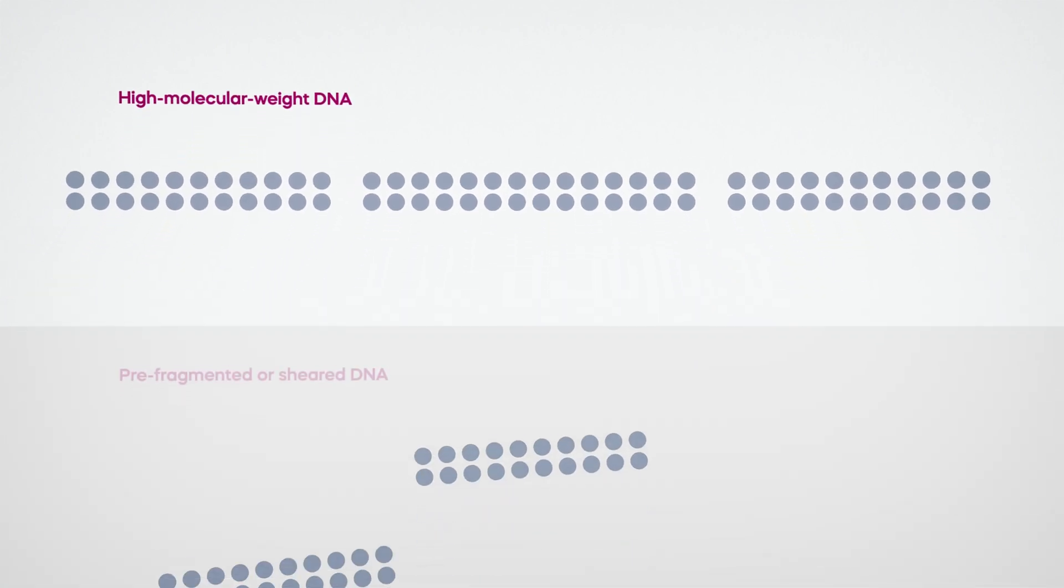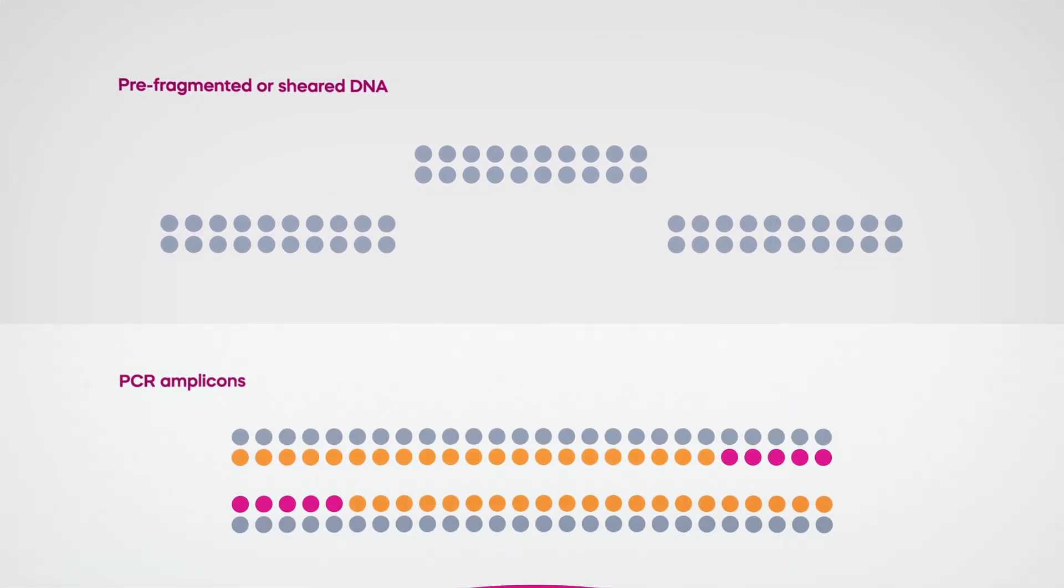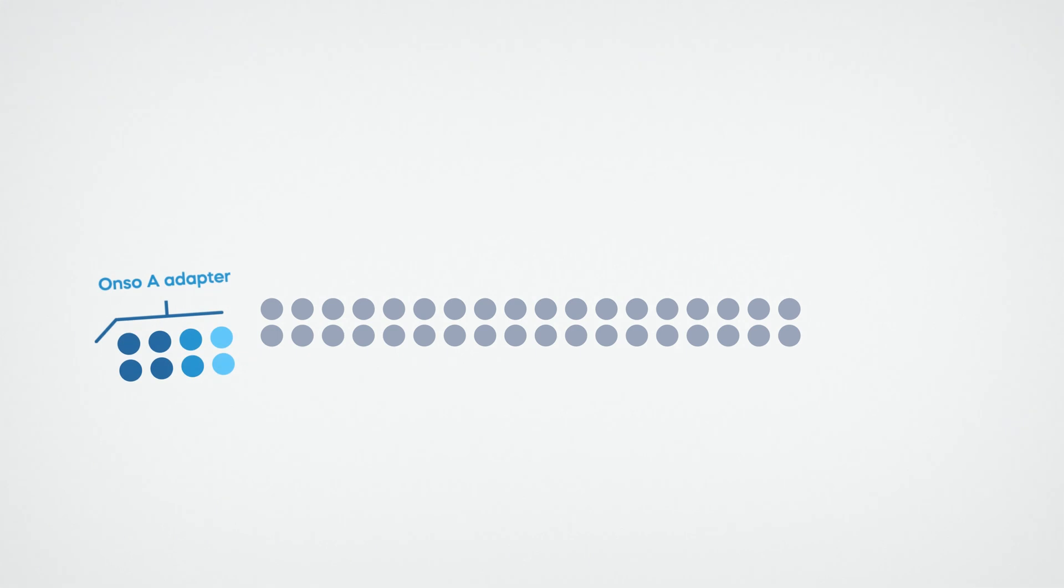Whether you start with high molecular weight DNA, a pre-fragmented or sheared sample, or PCR amplicons, it's easy to transform your DNA into a compatible library structure that's ready for sequencing.